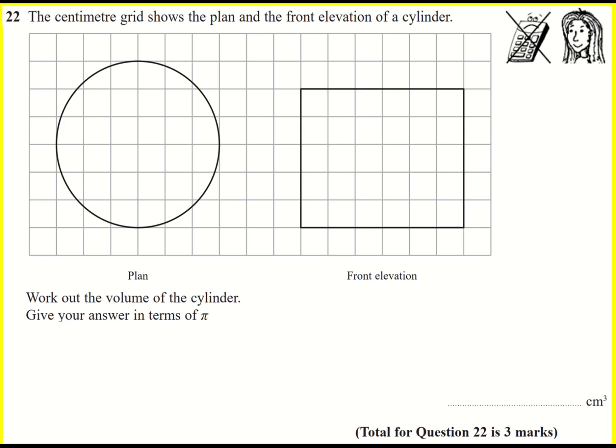The centimetre grid shows the plan and the front elevation of a cylinder. Work out the volume of the cylinder and give your answer in terms of pi.